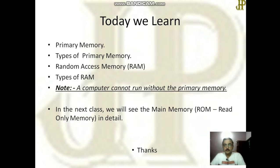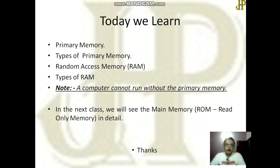That is all for today. Today we learned about primary memory and their types, and we saw RAM and their types — SRAM and DRAM. An important note: a computer cannot run without primary memory. A computer can run without secondary memory, but not without primary memory, because for each application to run, that application must be moved from the secondary device to main memory for execution by the CPU.